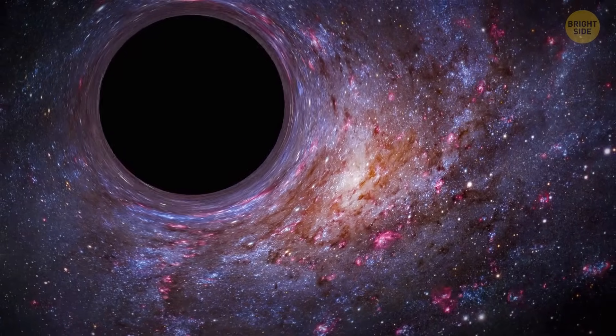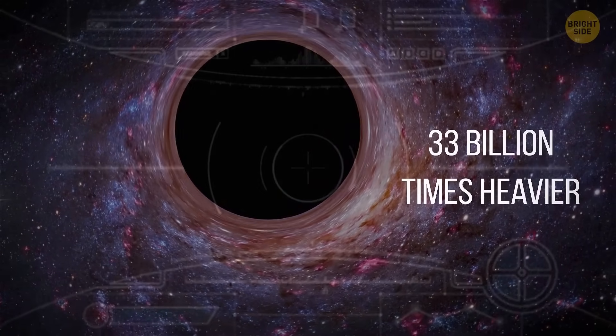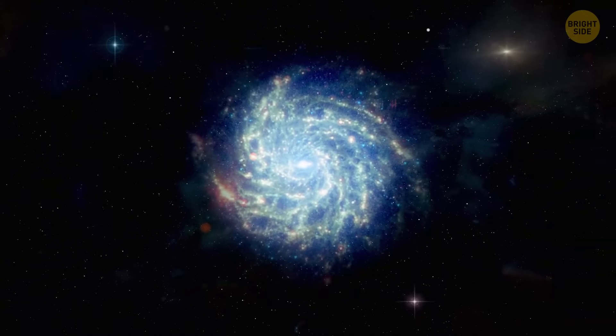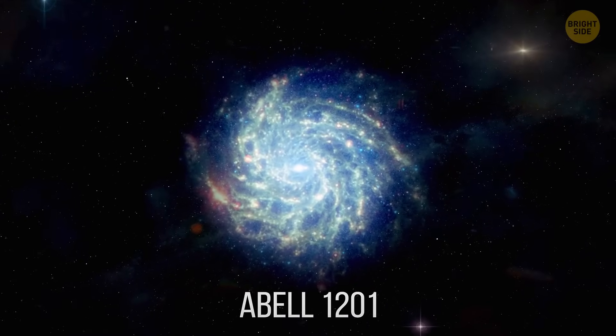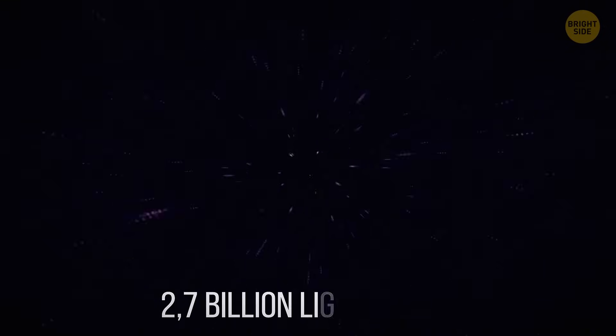Recently, astronomers discovered a black hole that is 33 billion times as heavy as our sun. This space giant sits at the center of a supergiant elliptical galaxy called Abel 1201, which is located 2.7 billion light years away from our planet.